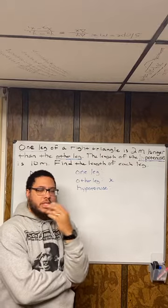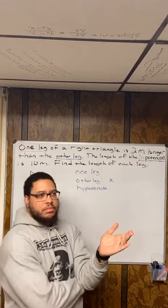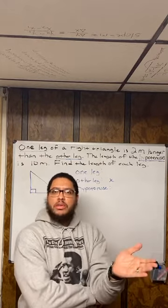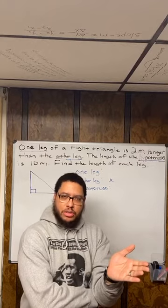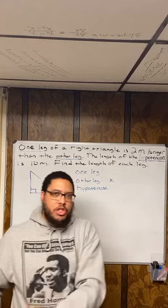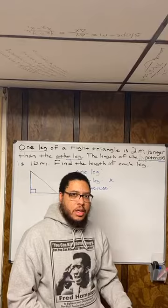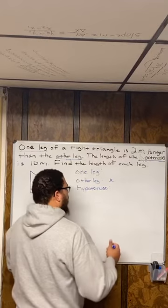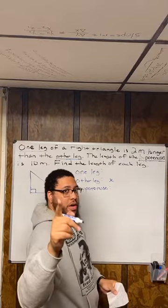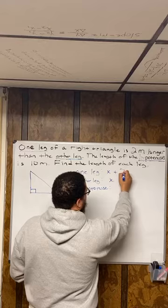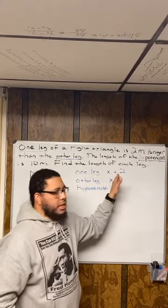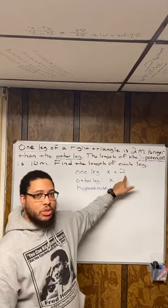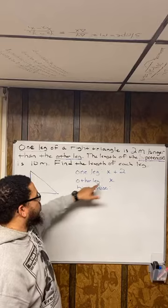Think of it this way: if somebody was at the pool and underwater for 20 seconds, and then somebody else was underwater for two seconds longer than them, how long were they underwater? 22 seconds, right? Because two seconds longer means you add two to the first person's time. So we represent the same idea here: the one leg, if it's two meters longer than the other leg, we represent it as X plus 2. If it were shorter than, we would do minus 2. But because it's longer than, we do plus 2. So we've got X plus 2.